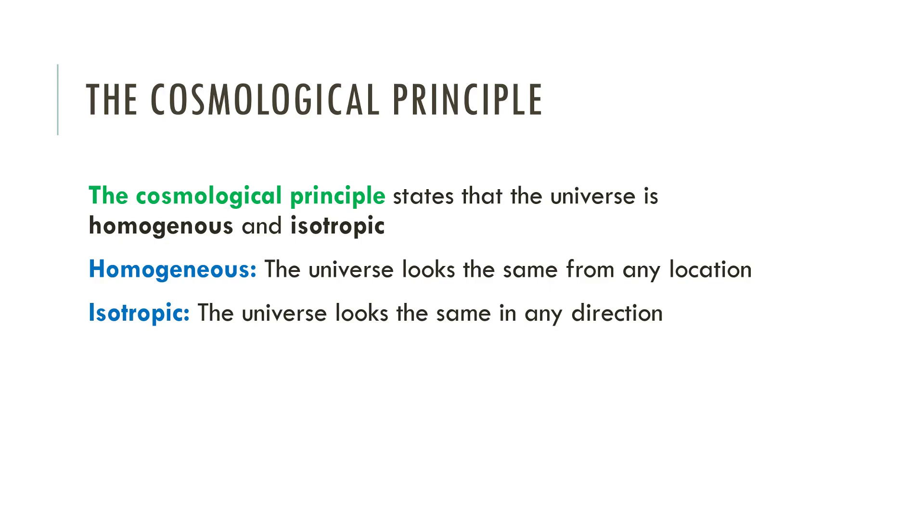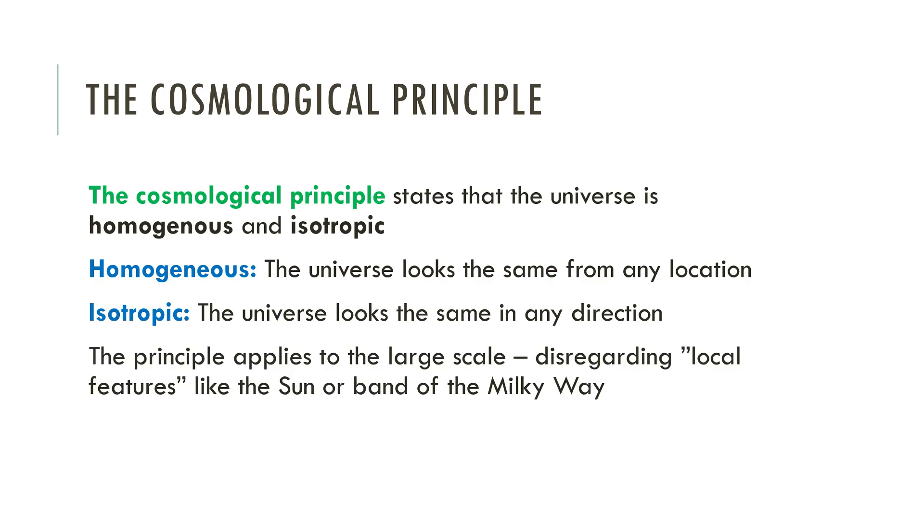So homogenous and isotropic are the two claims about the universe here, which is pretty astounding that it is very, very, very consistent and uniform. And we're going to look at some ways that we've measured that.